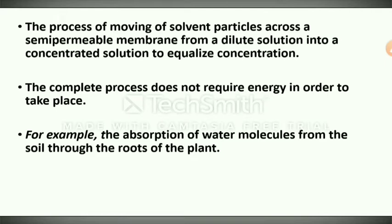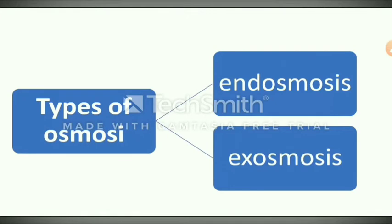To compare: diffusion — if I have a smell in my house, the smell spreads to the other side of the room; that is called diffusion. For osmosis, the root absorbing water from the soil is an example of osmosis. The types of osmosis include endosmosis and exosmosis.